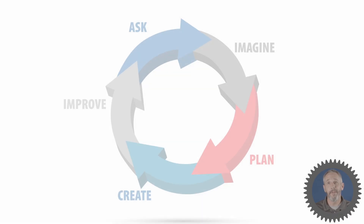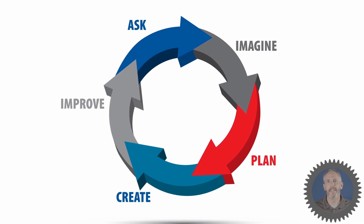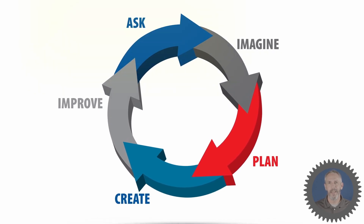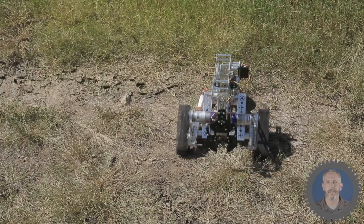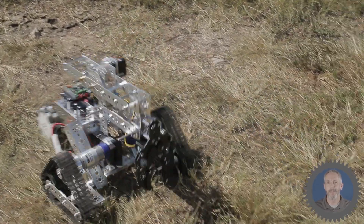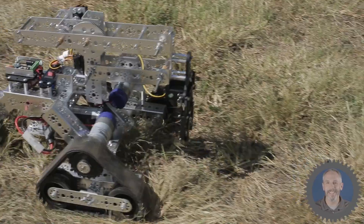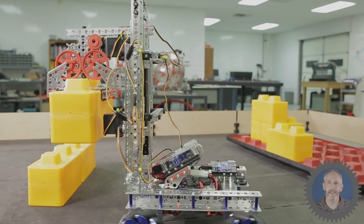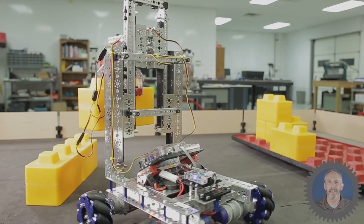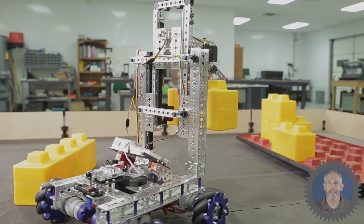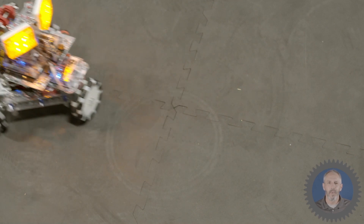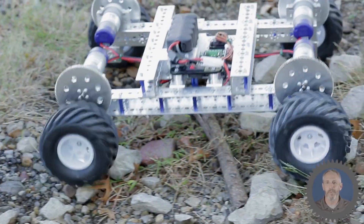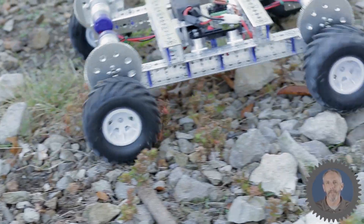When building robots, we always encourage you to use the engineering design process, and the first step is asking questions. There are several important driving questions to ask yourself: How fast does my robot need to move? How much weight does my robot need to move? How maneuverable does the robot need to be? And what type of terrain or surface will the robot be driving on?